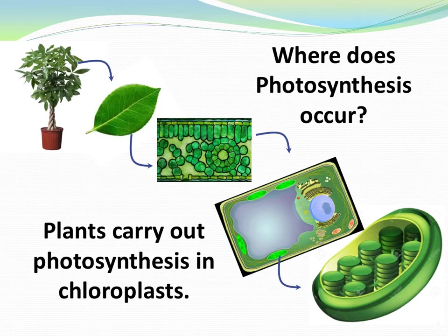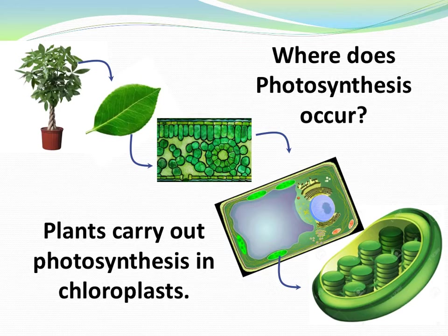The magic of photosynthesis happens right here in the chloroplast of plant cells. And if you look closely at the single chloroplast, you'll see a complex system of membranes, disks, and fluid. So before trying to understand the process of photosynthesis, it's important to consider the structure of the chloroplast. So let's take a look.